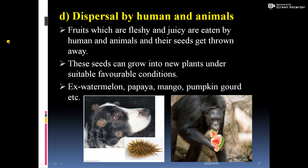Fourth is dispersal by humans and animals. Animals, like the dog shown in the picture, have seeds containing thorn-like or hook-like structures that attach to their fur or hair. When the animal moves from one place to another, the seeds can fall off and germinate to form a new plant.